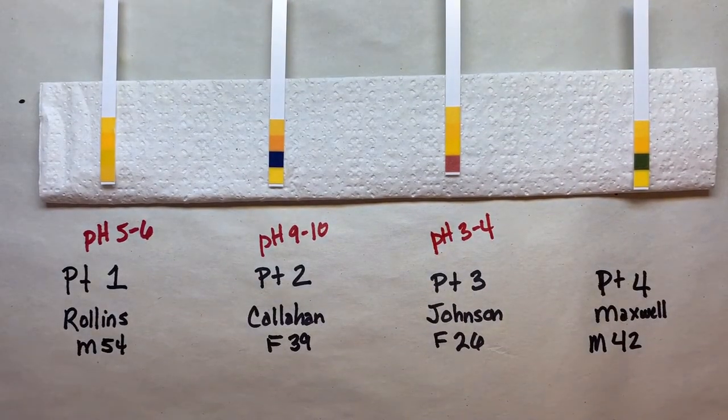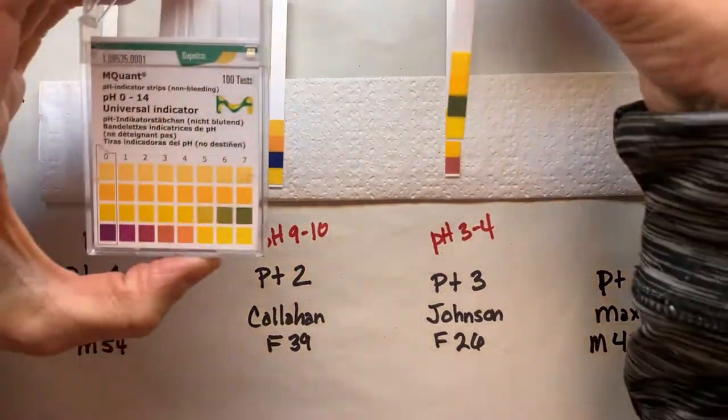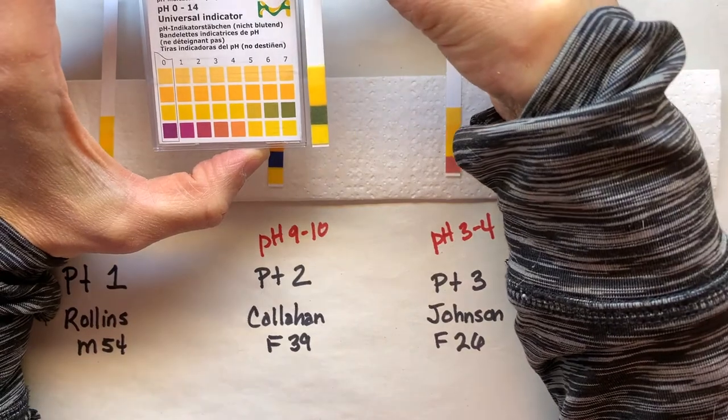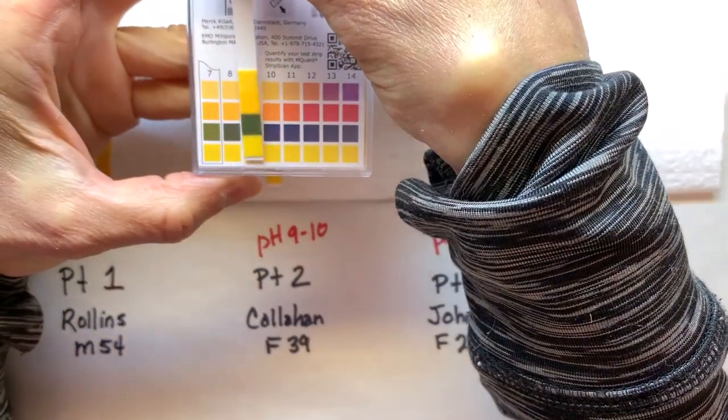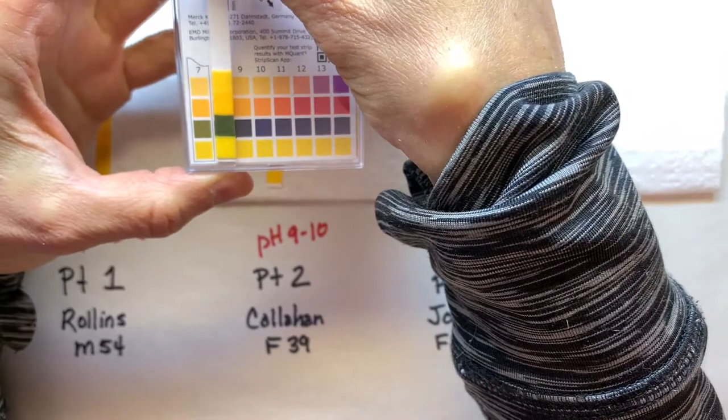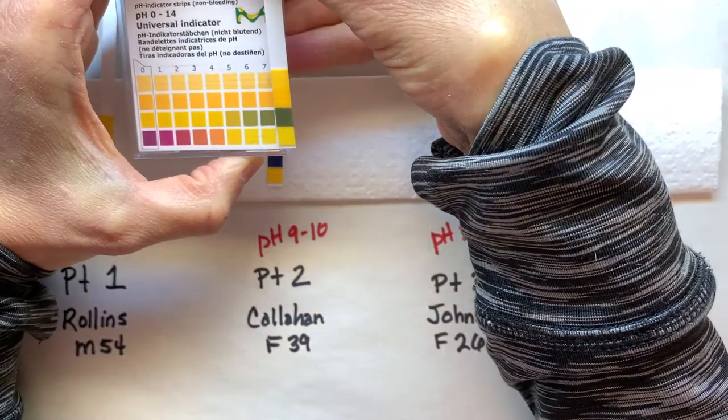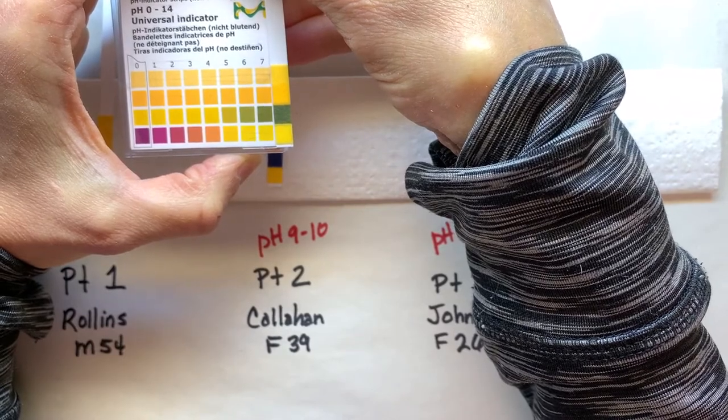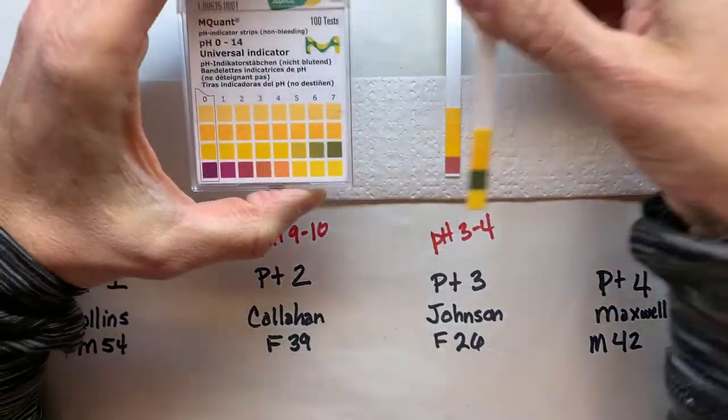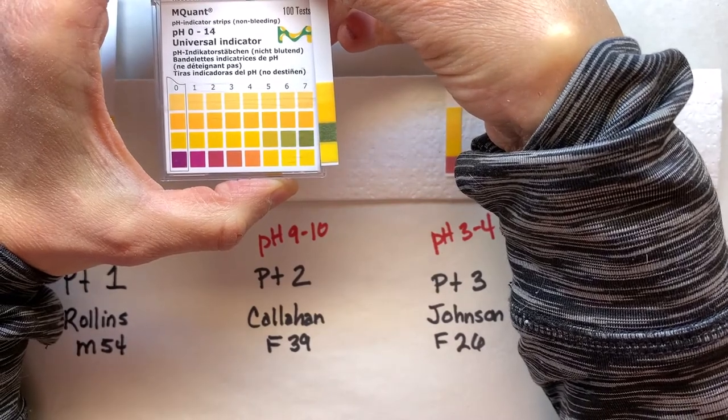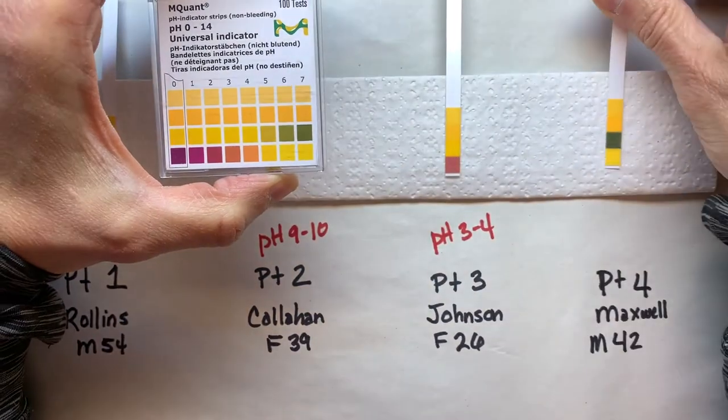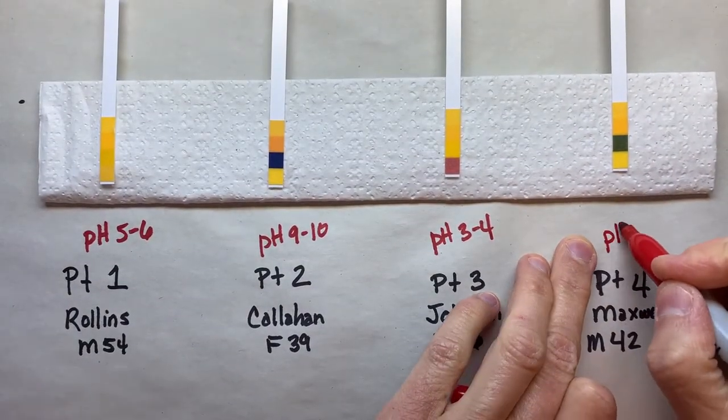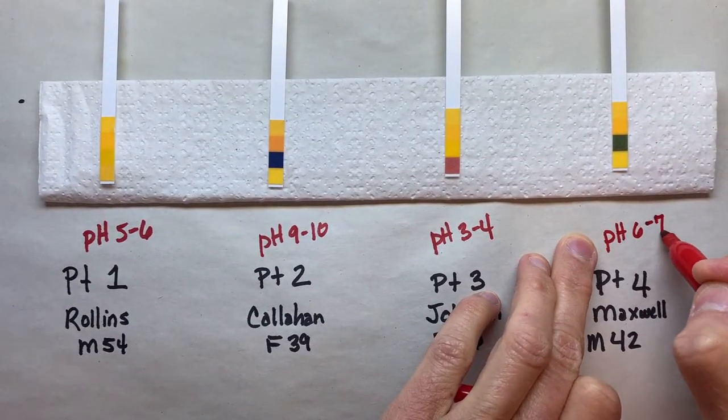Maxwell, Mr. Maxwell's urine. Over here it said, let's look at his, we'll double check, close to 7, getting around 7 there. I'm going to say somewhere between 6 and 7 for him, so we can see that again. Somewhere between 6 and 7 for Mr. Maxwell.